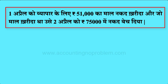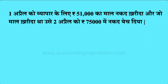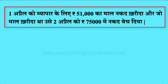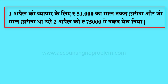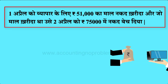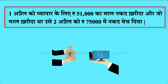उस transaction में एक अप्रैल को व्यापार के लिए 51,000 का माल नकद खरीदा और जो माल खरीदा था उसे 2 अप्रैल को 75,000 में नकद बेच दिया। ऐसा बोलने में तो ठीक लगता है, पर वाकई में यह अस्पष्ट है — इसमें यह नहीं मालूम पड़ता कि क्या माल था, कितना था, उसका rate क्या था।